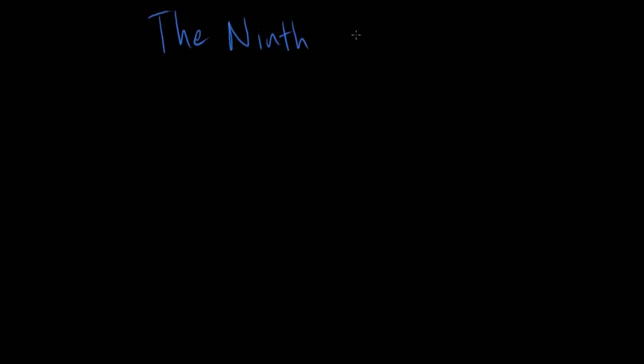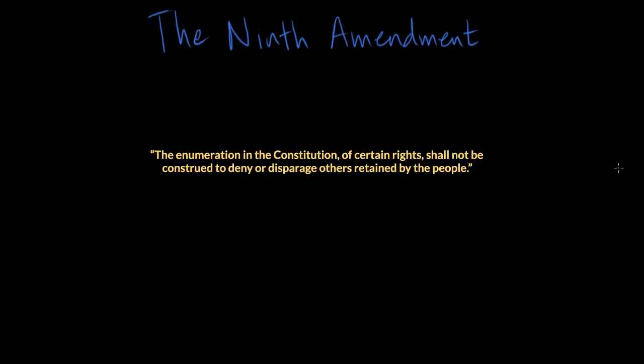Hi, this is Kim from Khan Academy. Today we're learning more about the Ninth Amendment to the U.S. Constitution, which reads: the enumeration in the Constitution of certain rights shall not be construed to deny or disparage others retained by the people.